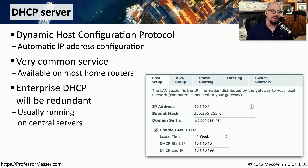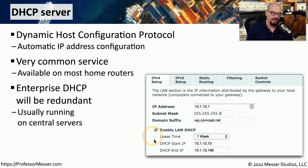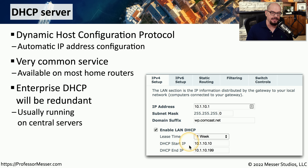If you're in an enterprise IT department, there will probably be multiple DHCP servers to provide redundancy should one become unavailable. Here's a very simple DHCP configuration on a home router. The lease time is set to one week — that's how long someone can retain a single IP address before they have to renew it. And there's a range of IP addresses assigned by this DHCP server, starting at 10.1.10.10 all the way through 10.1.10.199.